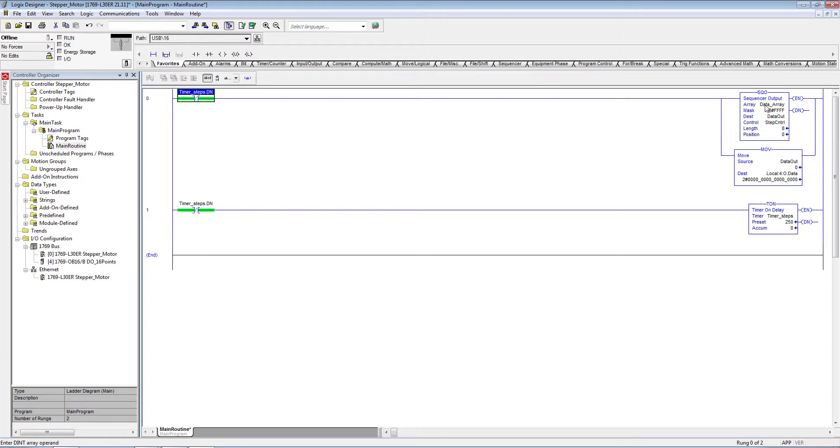The sequencer output instruction is reading this data array elements one by one based on every next interval which is set by this timer at 250 milliseconds. When it's done for 250 milliseconds it energizes this rung and the first element or next element of the array will be copied to this data output variable.